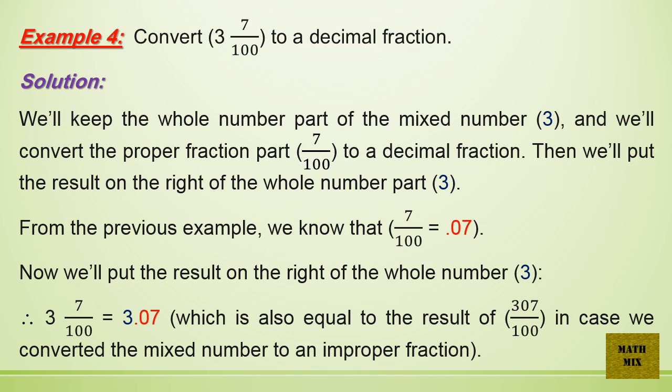Example 4: Convert 3 and 7 hundredths to a decimal fraction. We keep the whole number part of the mixed number, which is 3, and convert the proper fraction part — 7 over 100 — to a decimal fraction, then place the result on the right of the whole number. From the previous example, 7 over 100 equals 0.07. Therefore, 3 and 7 hundredths equals 3.07, which also equals 307 over 100 as an improper fraction.